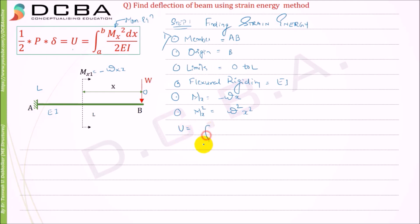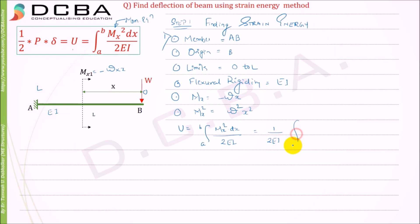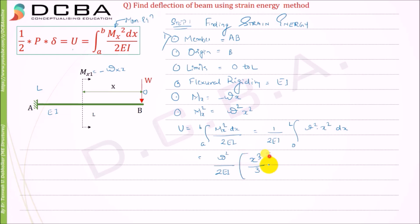The strain energy is the integration from A to B of Mx squared dx upon 2EI. Substituting the limits 0 to L and taking 1 upon 2EI outside, we get the integral from 0 to L of W squared·x squared dx. Taking W squared outside as well, we have W squared upon 2EI times the integral of x squared, which is x cubed by 3.